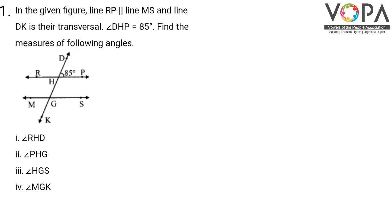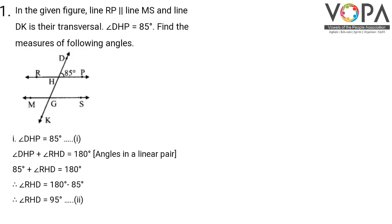In the given figure, line RP is parallel to line MS and line DK is their transversal. Angle DHP is equal to 85 degrees. Find the measures of the following angles: angle RHD, angle PHG, angle HGS, and angle MGK.